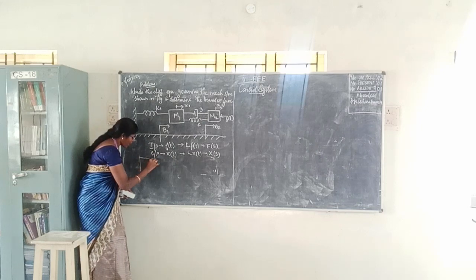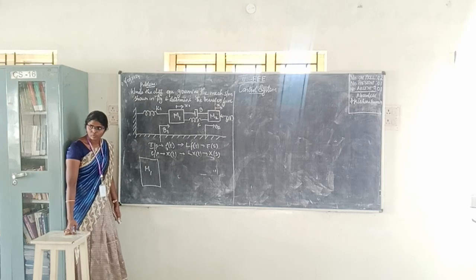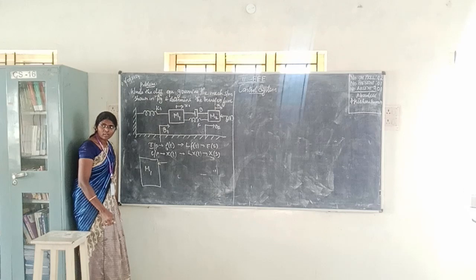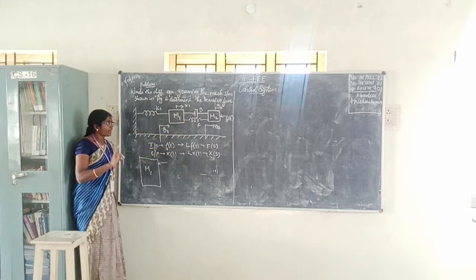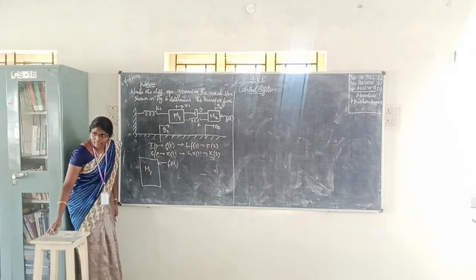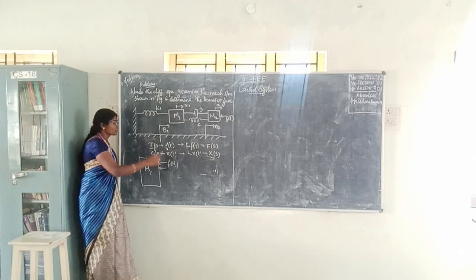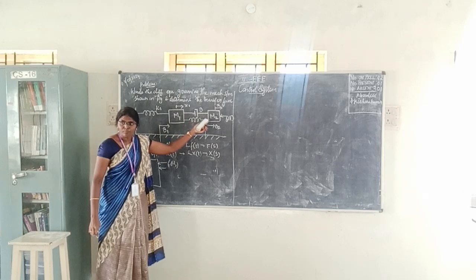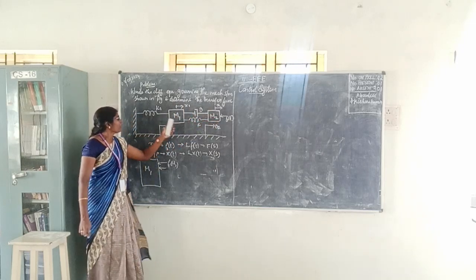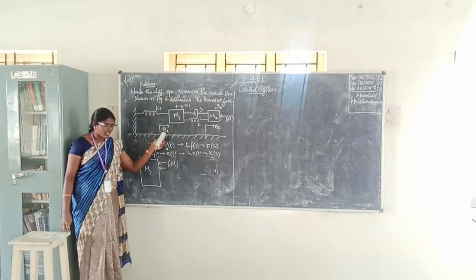First, we write the differential equation governing mass M1. For mass M1, we consider all the forces acting on it. The input is F(t). The first component connected to M1 is dashpot B1. We write the terms in the same order: mass, then dashpot.